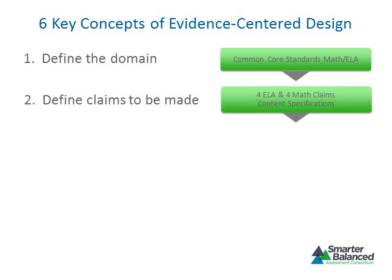Once the domains to be measured are defined, the next step is to define the claims that will be made about the domains. A claim is a statement about what a student knows or is able to do. After carefully analyzing the Common Core State Standards and thinking about what students must know and be able to do to be prepared for college and career paths, Smarter Balanced has identified four claims specific to English language arts and four claims for mathematics that focus on what students are expected to be able to do at each grade level.